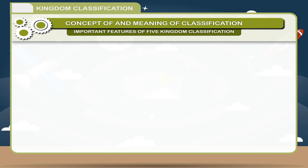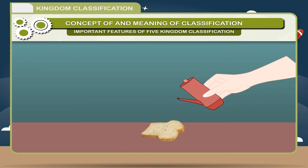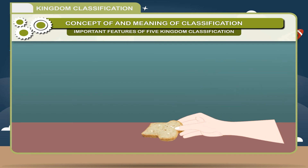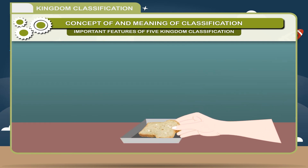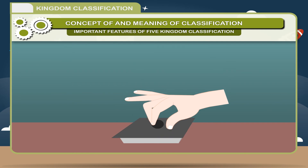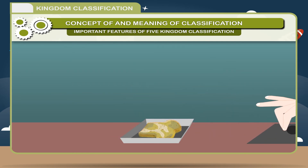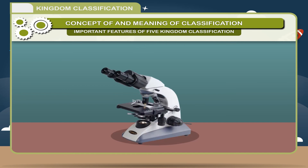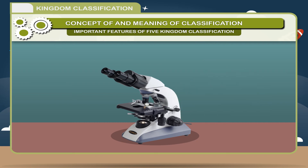Activity: Take a piece of bread. Sprinkle some water on it. Leave it for a few days in a warm place. After that, you will find bread mold growing on it. Scrape it and place it on a slide, and observe the structure of the bread mold under the microscope.